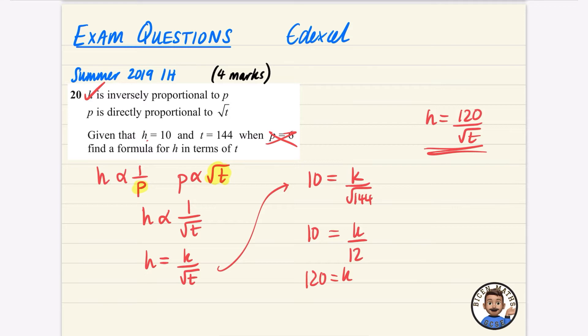Meaning if I go back to this formula that I have here, I can say that H is equal to 120 over the square root of T, which is exactly the same thing that we said in the previous working.